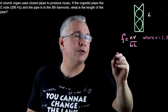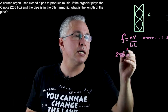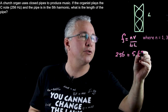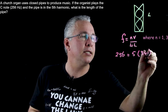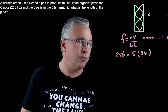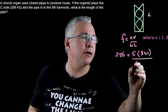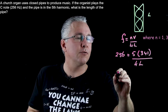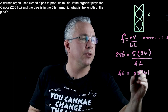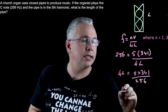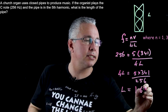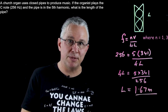We're told the frequency is 256 Hertz and this is the fifth harmonic, so n equals 5. The velocity of sound is 341 meters per second — that can vary with air temperature, but that's the value I'll use. Rearranging, 4L equals 5 times 341 divided by 256, and the answer works out to 1.67 meters. That's the length of this particular pipe.